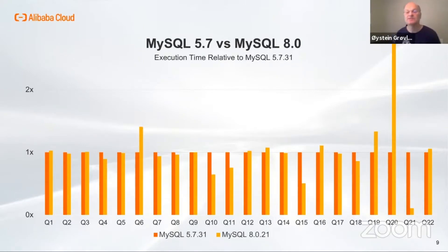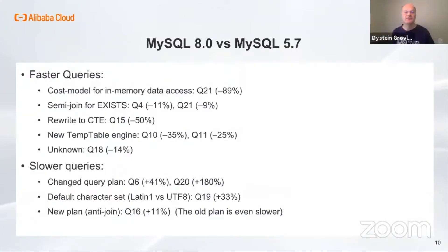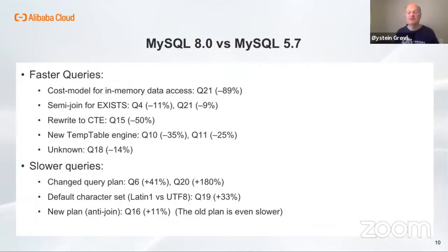Comparing MySQL 5.7 and 8.0, there are a few queries where 8.0 is slower, but also some where it is faster. Starting with the good news: query 21 is improved by 89% since the optimizer now uses information from InnoDB about whether the data is in memory or on disk to pick a better join order. This query also benefits from the newly added transformation from EXISTS to IN, which means that semi-join may be used. The total improvement is 90%. Semi-join will also be used for query 4 for the same reason.